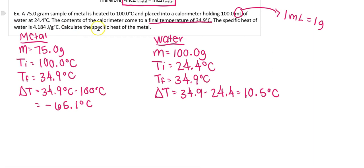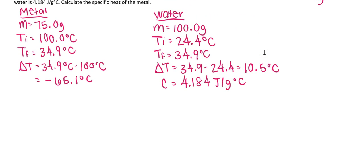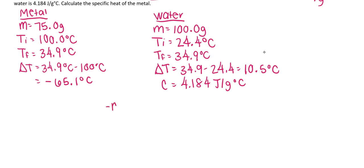The problem tells us the specific heat capacity of water is 4.184 joules per gram degree Celsius, and we want to calculate the specific heat of the metal. Our equation is: negative mc∆T of the metal equals positive mc∆T of the water. Q of the metal is negative because the metal is losing heat energy — it's exothermic, heat is exiting. Q of the water is positive because heat is entering the water — it's endothermic.